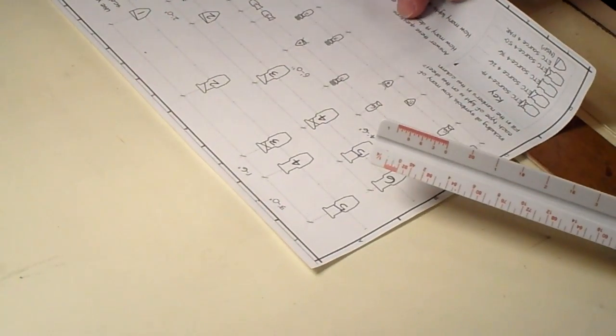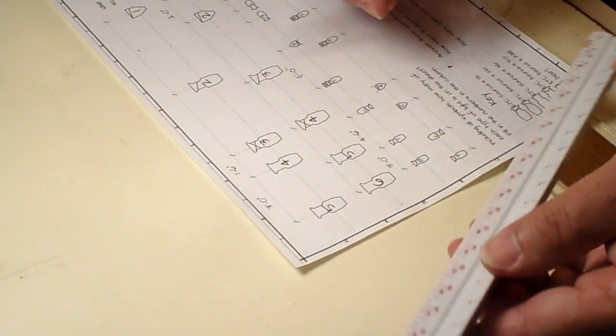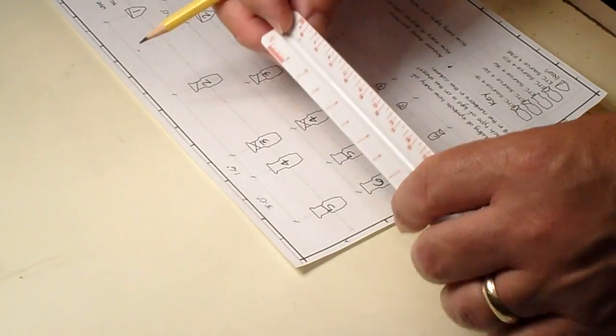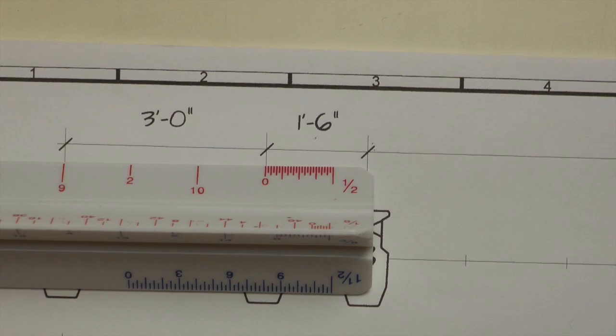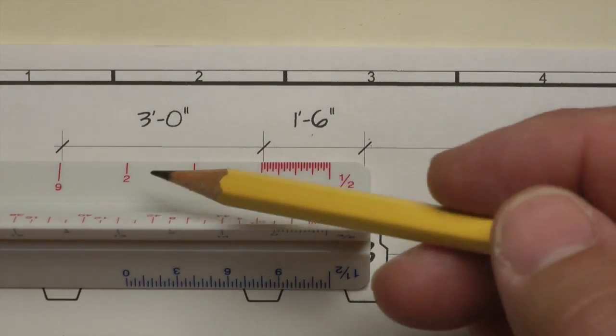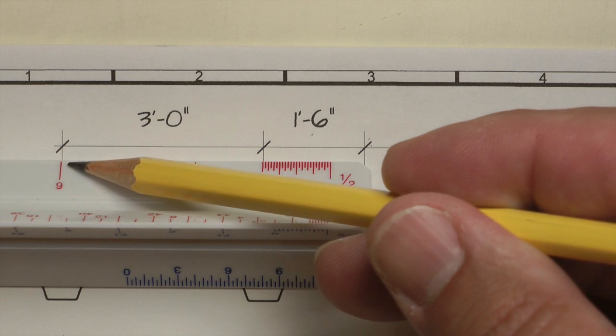Same thing happens with the half-inch scale, but I have to turn the ruler over. Here we've got zero, one foot, two feet, three feet.